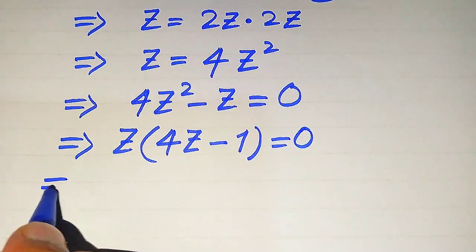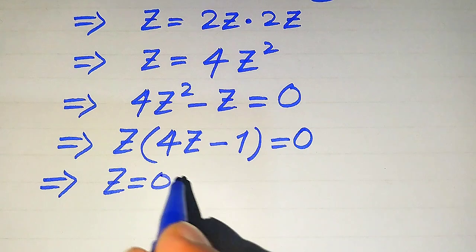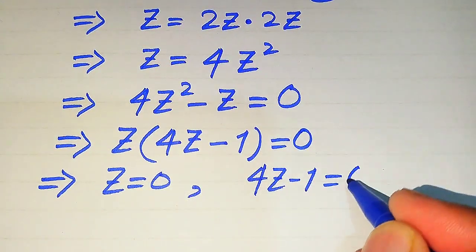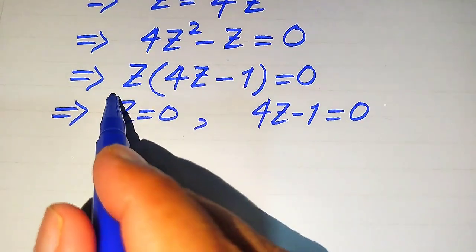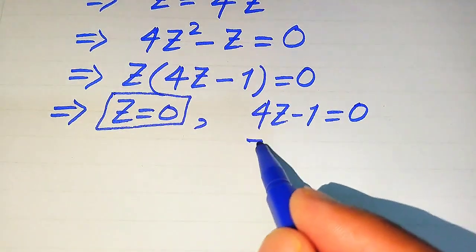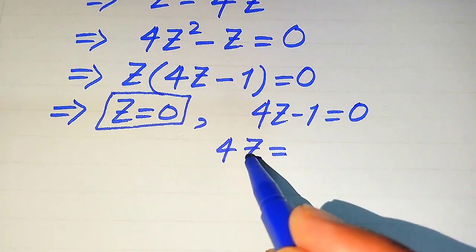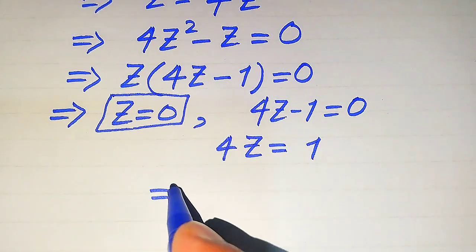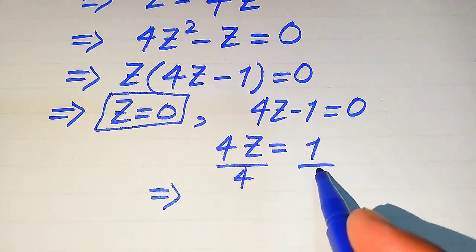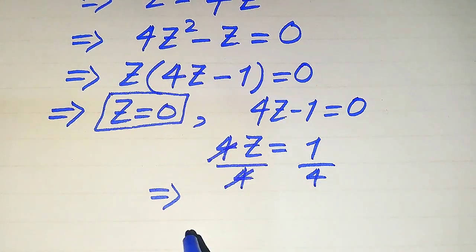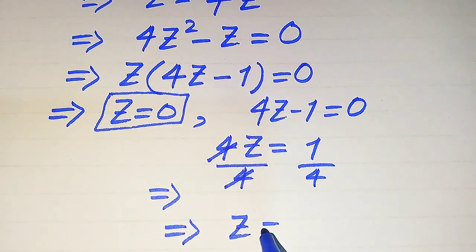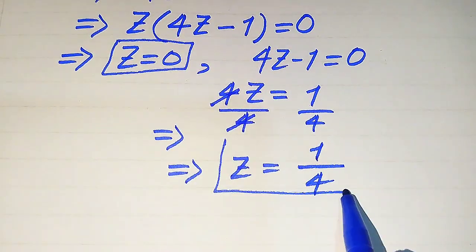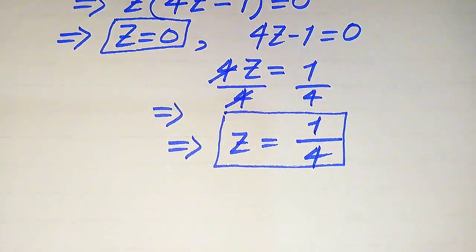Both terms involve z, so we take common z from here. After factoring, we get z times (four z minus one) equals zero. We divide into two cases: the first case gives z equals zero, and the second case is four z minus one equals zero. From the second case, four z equals one, we divide both sides by four, and we get z equals one divided by four. So we have two roots: z equals zero and z equals one over four.